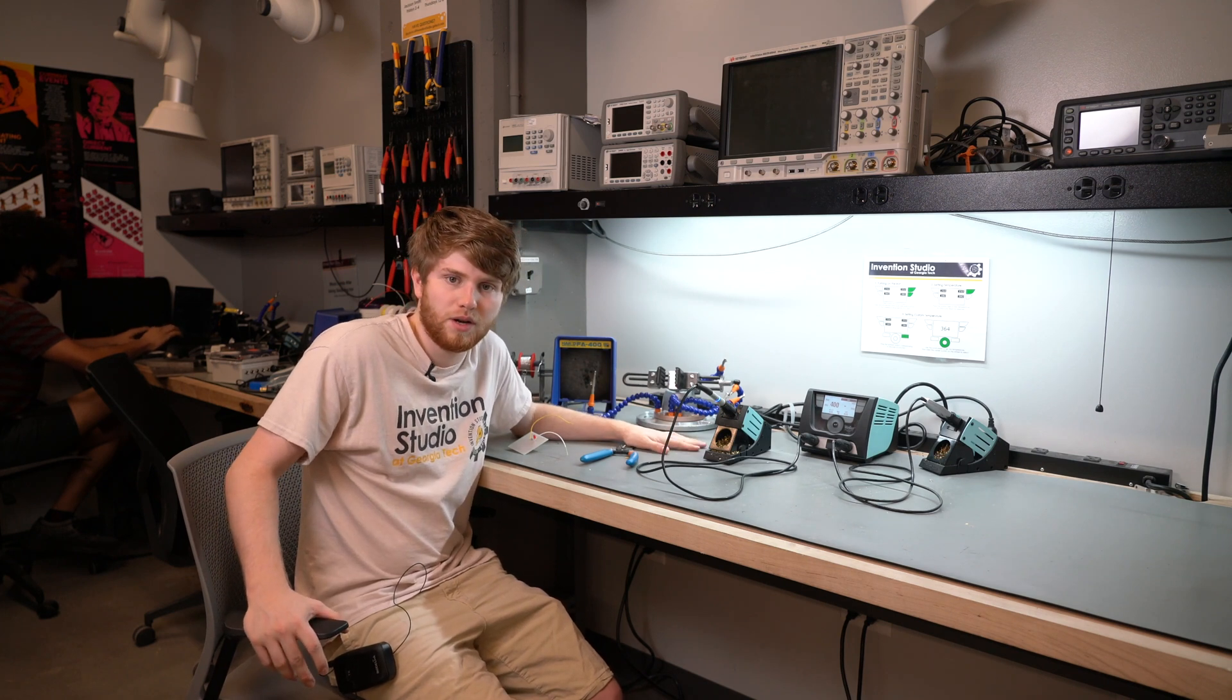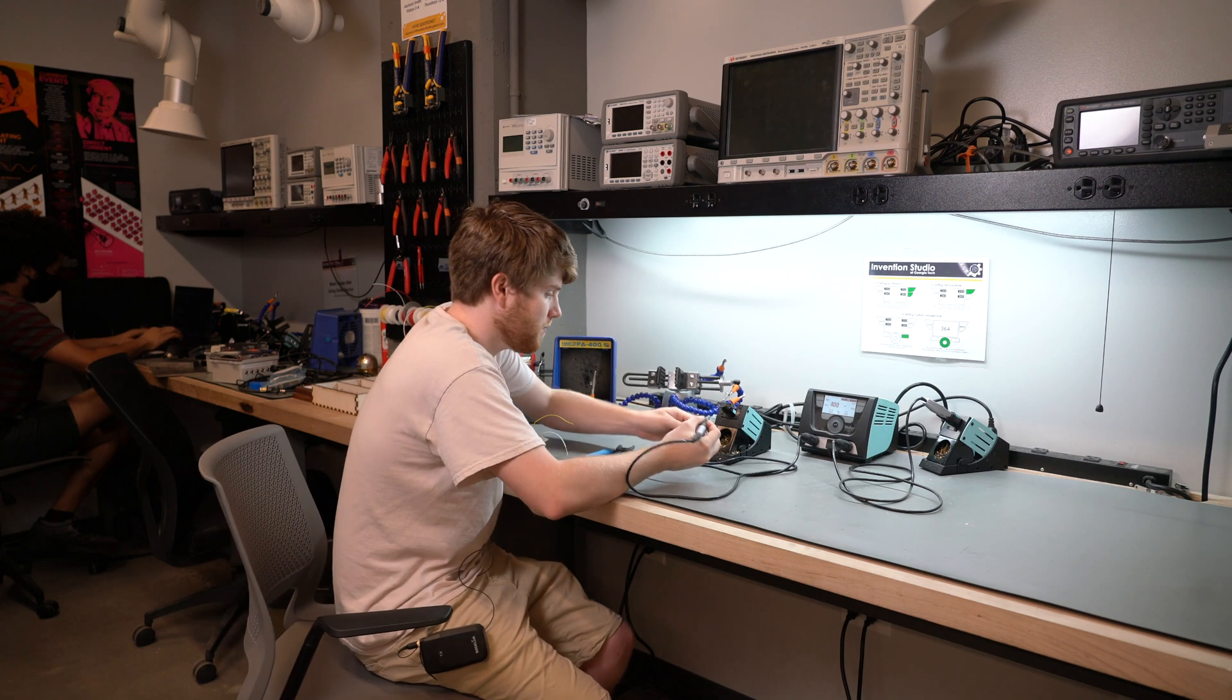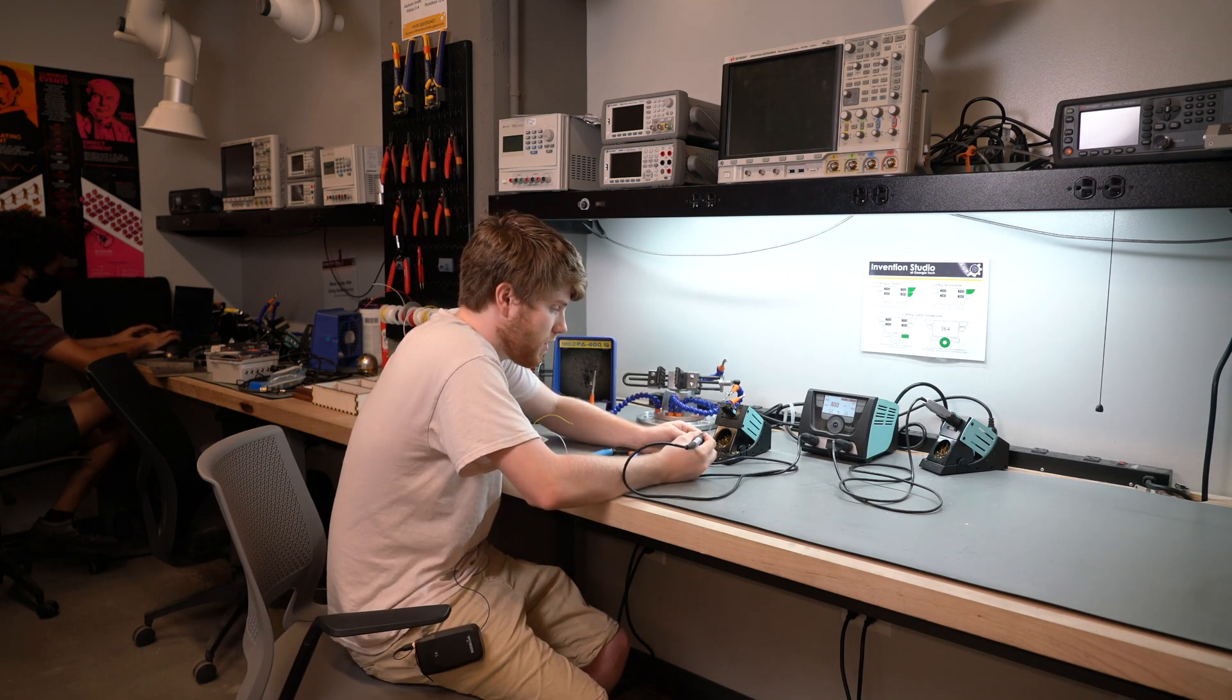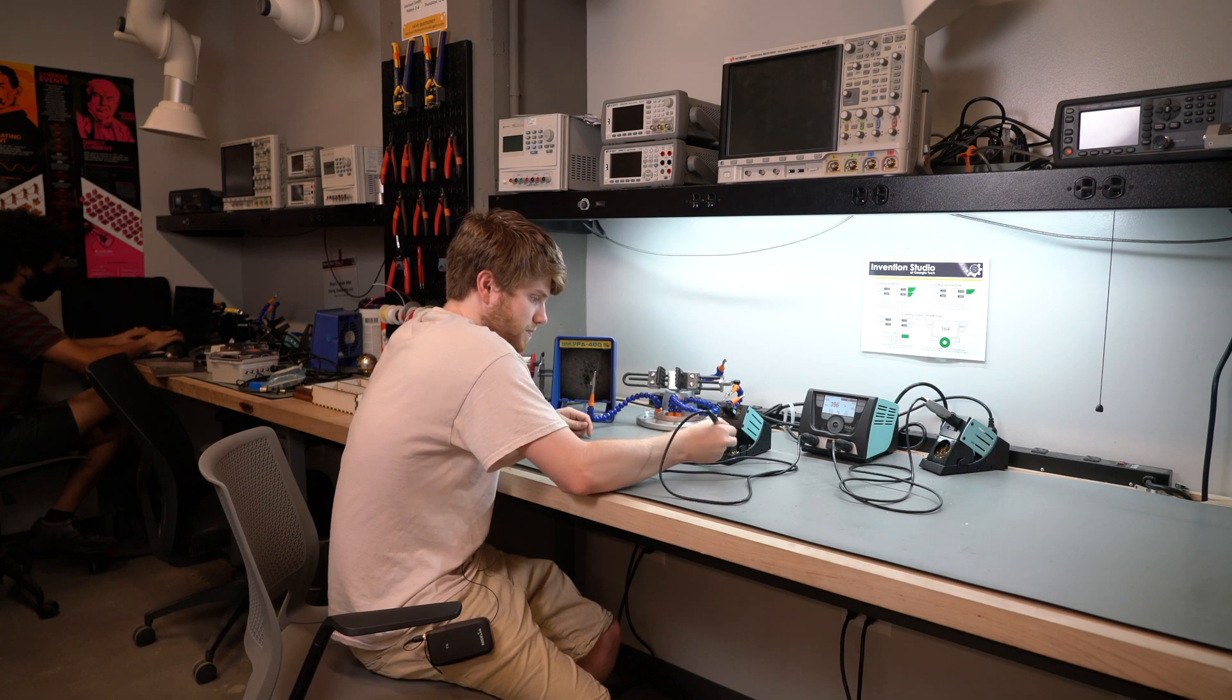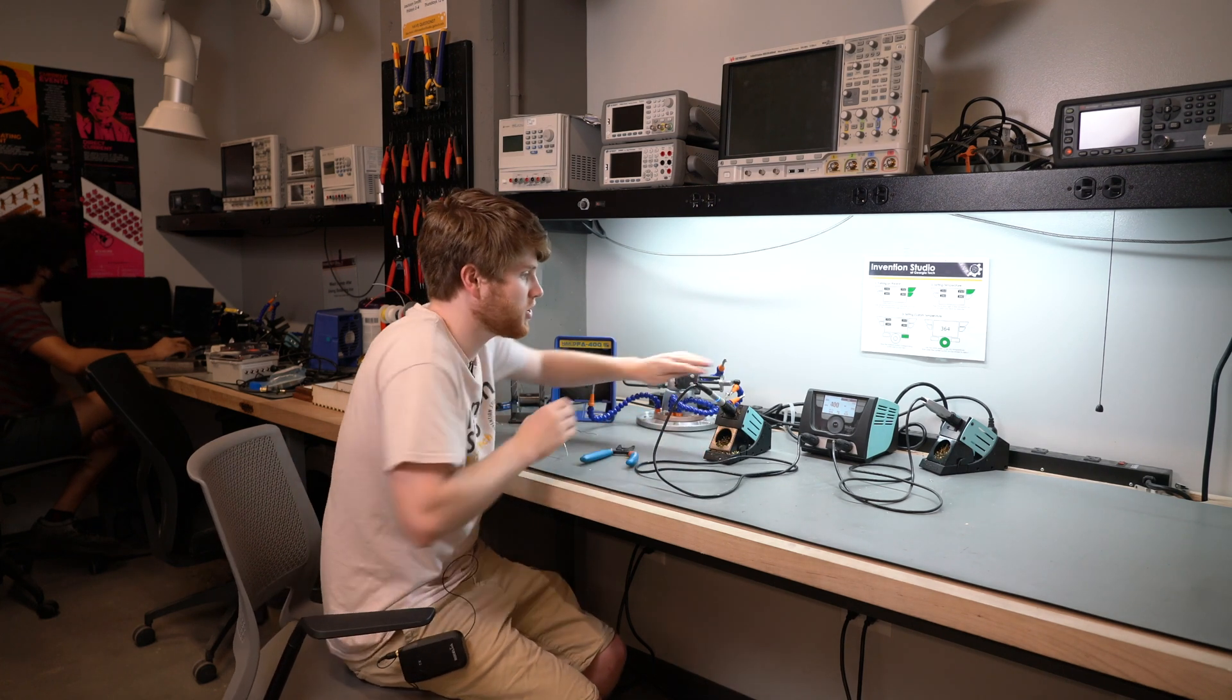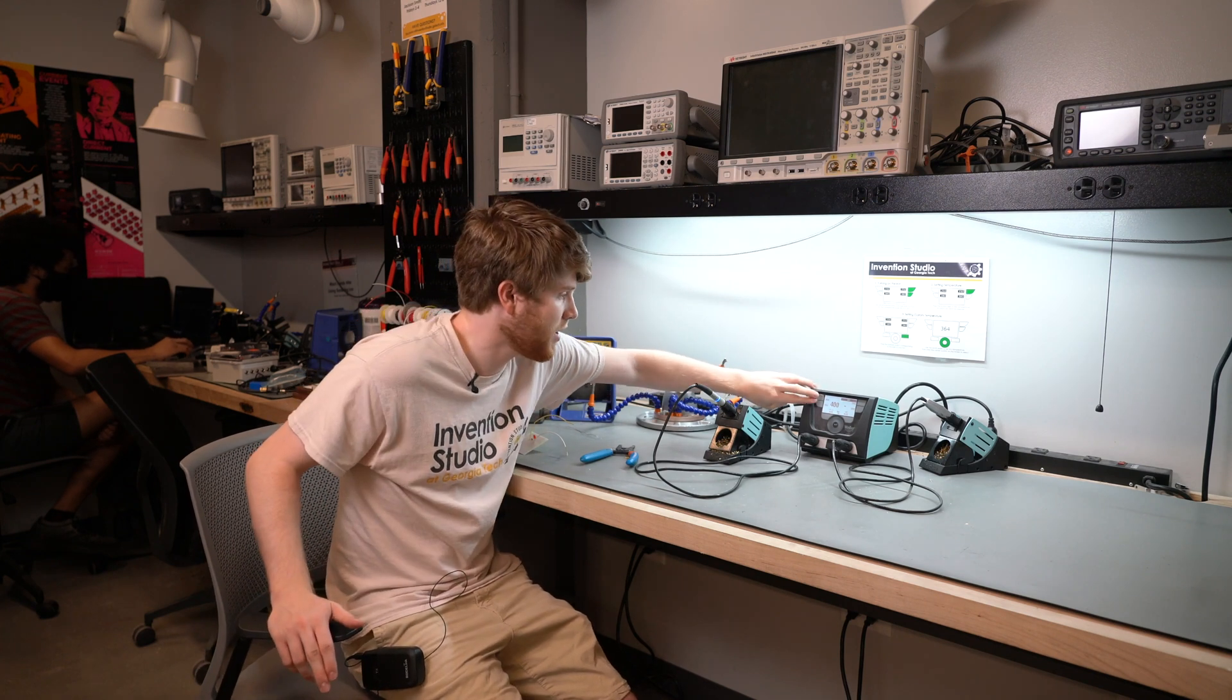Now it's time to, once again, tin our soldering iron. Put a little bit more solder on the end, rub into the steel wool, get a nice coating, and turn it off. You turn it off by doing the same button press you used to turn on the iron.